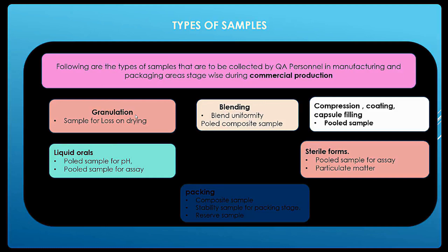For liquid oral formulations — syrups, suspensions, and emulsions — samples are collected at different stages. Parameters checked include pH of the solution, sugar content, and other formulation attributes. For sterile formulations, it is checked whether the product is sterile and whether the solution is clear. At the packing stage, the product packaging is verified and unique tests are performed as part of in-process checks.